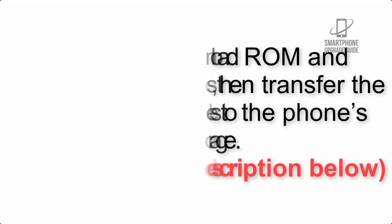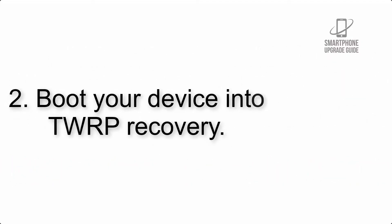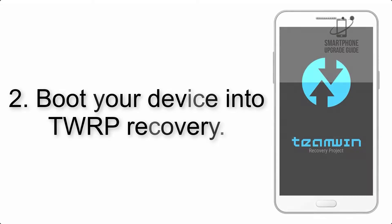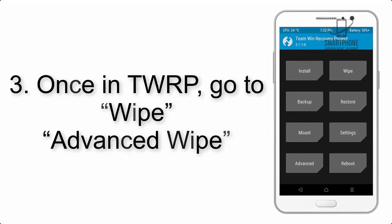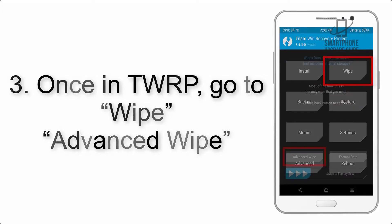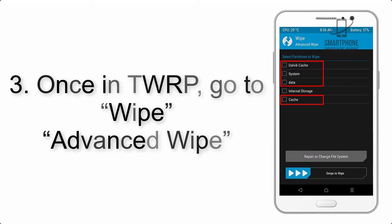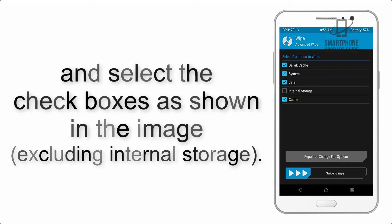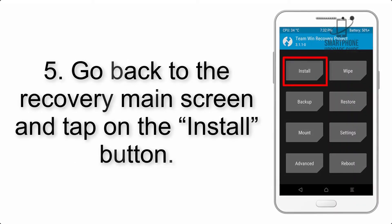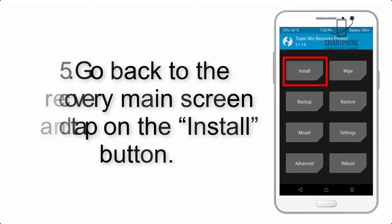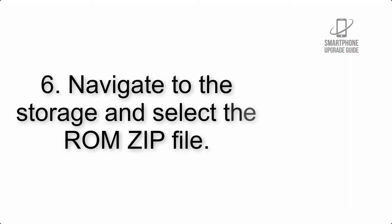Step 2: Boot your device into TWRP recovery. Once in TWRP, click on Wipe, then Advanced Wipe, and select the checkboxes as shown in the image, excluding internal storage. Step 4: Swipe the button to wipe the device. Step 5: Go back to the recovery main screen and tap on the Install button.